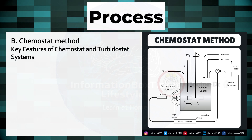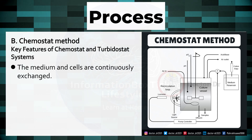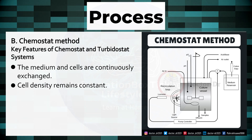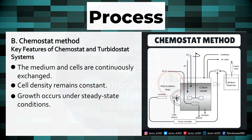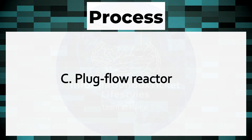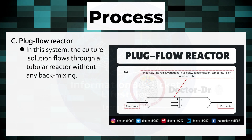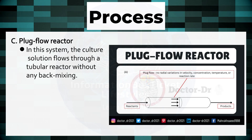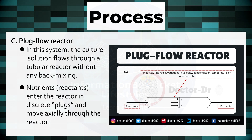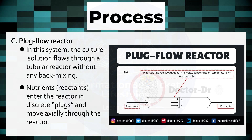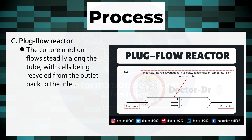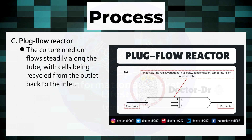Key Features of Chemostat and Turbidostat Systems: the medium and cells are continuously exchanged; cell density remains constant; growth occurs under steady-state conditions; and the system operates as an open system. Plug Flow Reactor: in this system, the culture solution flows through a tubular reactor without any backmixing. Nutrients and reactants enter the reactor in discrete plugs and move axially through the reactor. The culture medium flows steadily along the tube, with cells being recycled from the outlet back to the inlet.